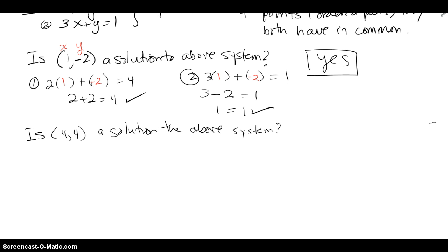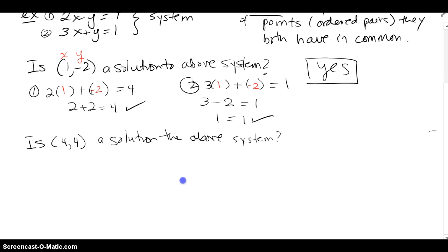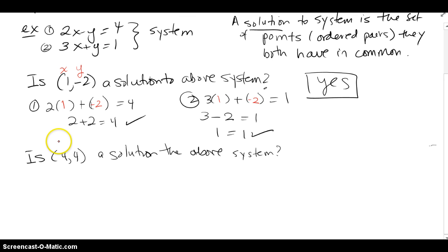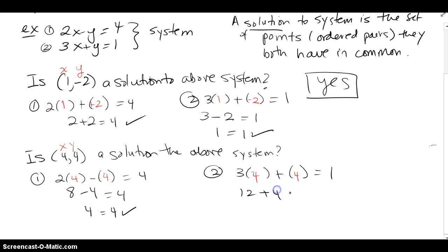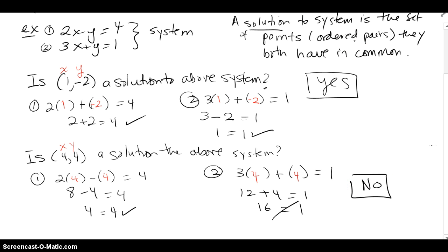So is (1, -2) a solution to the system? Yes, because it worked for both equations. Now is (4, 4) a solution to that same system? I'll plug it into both equations. That gives me 8 minus 4, which is 4 — so it works for the first one. But 3 times 4 is 12 plus 4 gives 16, which is not equal to 1. It worked for the first but not the second, so the answer is no — they don't share that ordered pair in common.